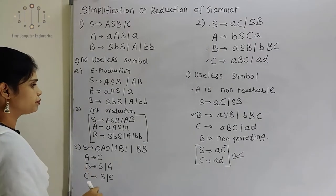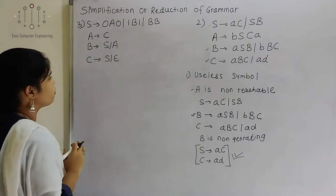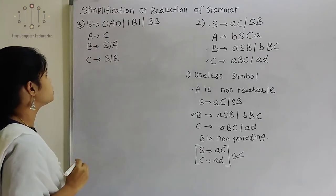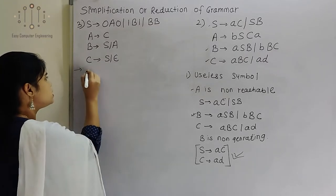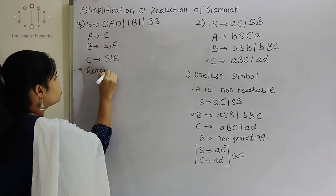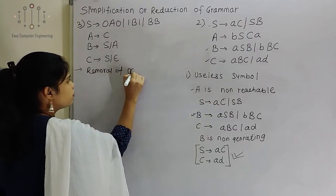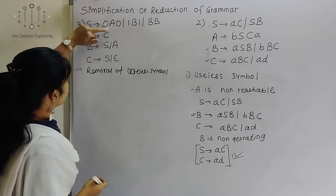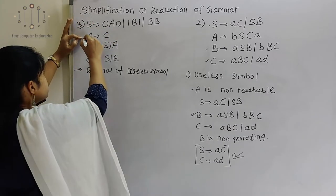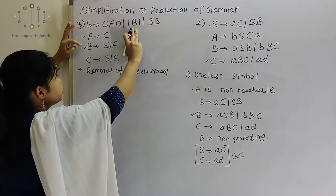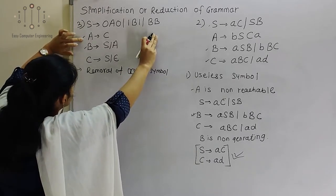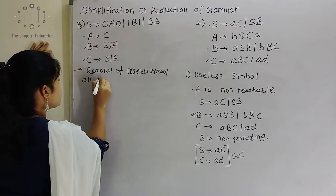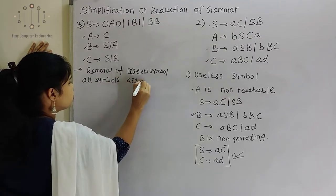Now we will see the third example. This example has four variables and terminals 0 and 1. There is unit production and also epsilon production. So we will try to simplify this grammar. First, removal of useless symbols — non-reachable symbols. From S we can reach A; from this production we can reach B; and from A we can reach C. That means every symbol is reachable — all symbols are reachable.